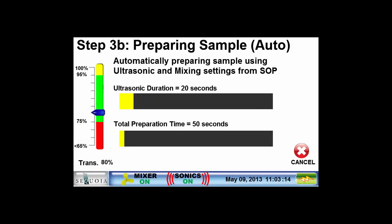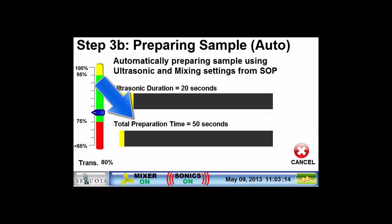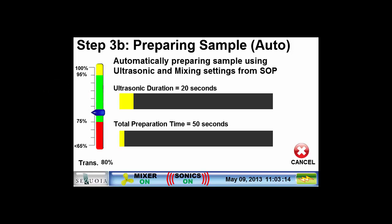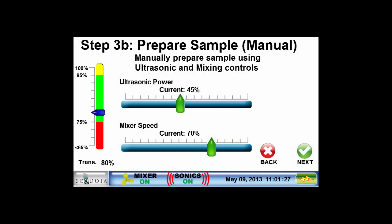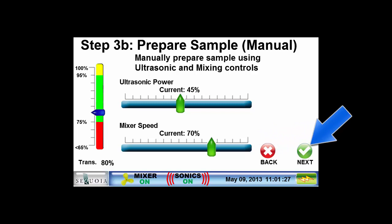Before the sample can be measured, we must first make sure that it is fully mixed and the particles are dispersed. The standard operating procedure controls the length of time the ultrasonic probe and mixer are on before the measurement is made. The vertical bar on the left shows the current optical transmission and whether it's within the optimal range — too many or too few particles will cause inaccurate results. The blue pointer should be in the green zone for the most accurate results. The horizontal bar shows the time remaining until the measurement is made. It is possible to configure an SOP to allow for preparing the sample manually, adjusting ultrasonic power and mixer speed. The manual mode is only recommended for developing a standard operating procedure; automatic sample preparation is highly recommended for the most consistent results.